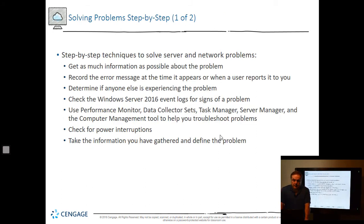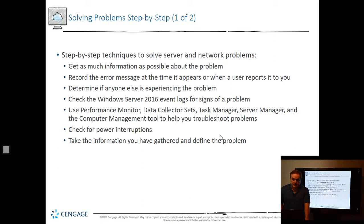Solve network problems by getting as much information as possible when something goes wrong. Record the error message at the time it appears or when someone reports it. Then determine if other people have had the same problem — if it's just one person, it won't have the same impact as if it's an entire department. For example, if one person calls saying they can't get to the Internet, ask the people on either side of them if they can, then check if you can. You can then determine whether this is a big problem or just an individual issue. Check performance monitor data and power interruptions to help define the issue.